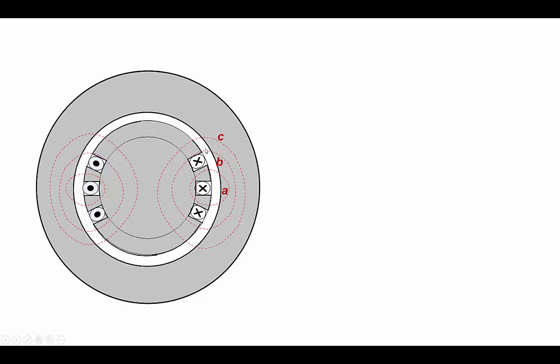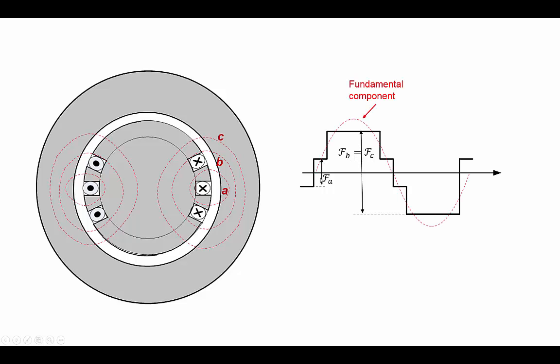B and C enclose one, two, three. If you look around, all the current enclosed by B and C is three. So, you end up with a distribution of the magneto motive force. FA is one third of FB and FC. You end up with a step waveform like this one. Step waveform like this one would have a fundamental and harmonics.